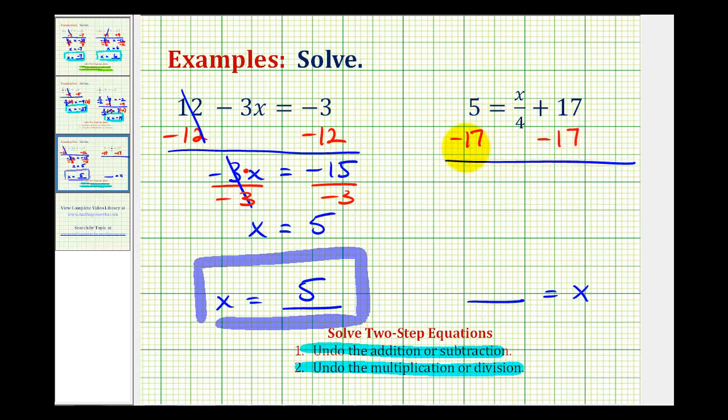So five minus 17 is equal to negative 12. So we have negative 12 equals x divided by four. And now we need to undo this division.